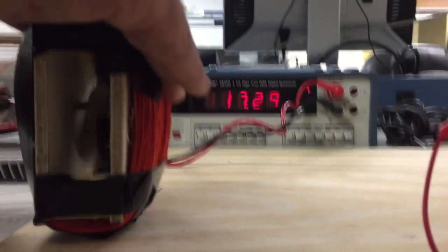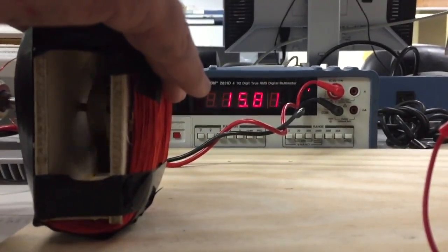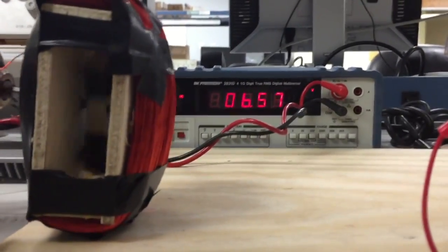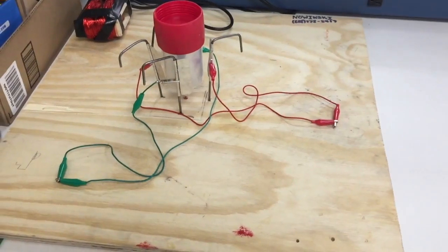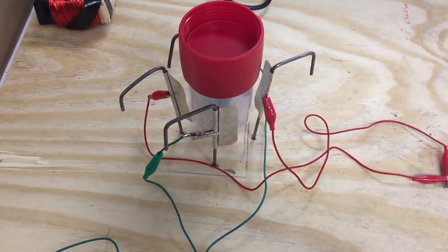The stator, or stationary part of the corona motor, is going to be made with four electrodes from an aluminum rotisserie pan. These electrodes are going to come in pairs, so for every positive one, there is also a negative one. We can have as many pairs as we want.